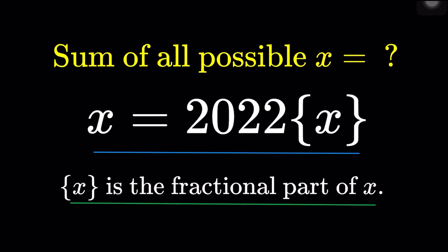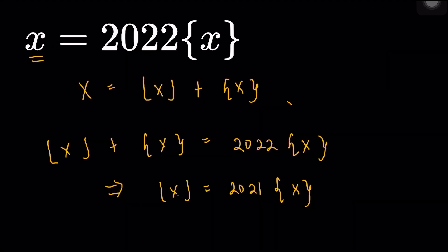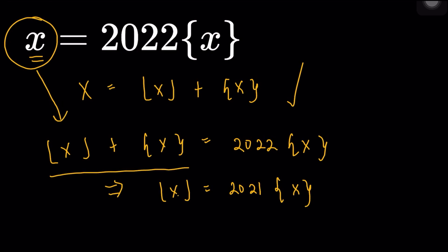Here is another equation that involves the fractional part of x, and whenever we have an item like this, we always want to consider writing the equation in terms of the floor of x, or the integer part of x, as well as the fractional part of x. We have the nice property that x equals the floor of x plus the fractional part of x, so I'm going to substitute x as floor(x) plus {x}.